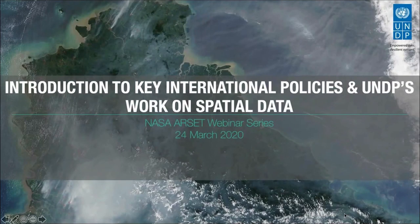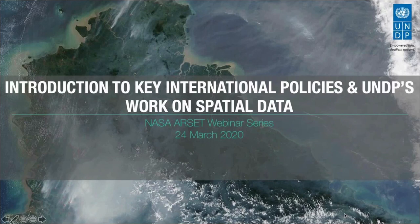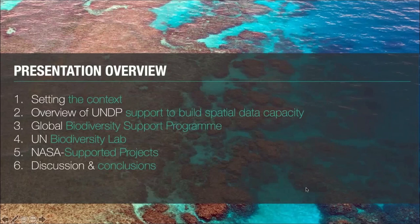Thank you so much, Amber. It's a pleasure to be here today. Amber has provided us with some great background on NASA's work on remote sensing and how these data can be used to support biodiversity conservation planning and monitoring. During the remainder of today's webinar, my colleague Annie and I will provide an overview of UNDP's work with partners on spatial data. We will introduce you to some of the key international policies on biodiversity and climate change, as well as provide an overview of the work that our team executes through the UN Biodiversity Lab. I'll start by providing an overview of UNDP's work to build spatial data capacity around the globe, and then turn it over to my colleague Annie to provide more information about the UN Biodiversity Lab and our NASA-supported projects.